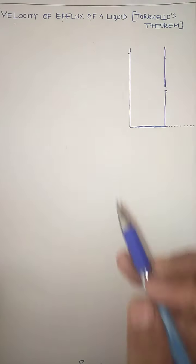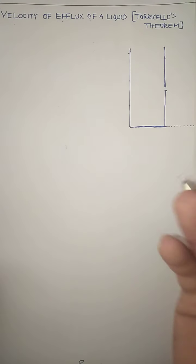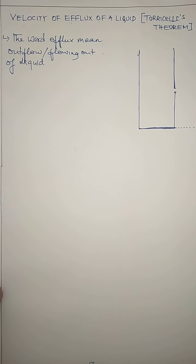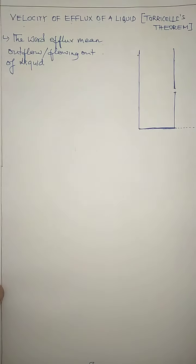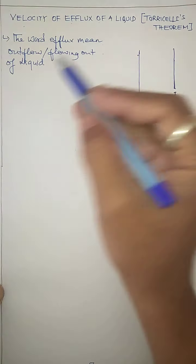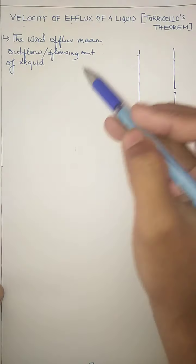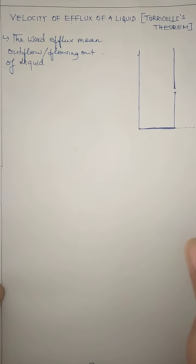The word efflux means outflow — the flow out from something. We are dealing with the outflow of liquid, which can also be a gas, but here we deal with liquid. This outflow occurs from a very small hole or narrow opening, and this small hole or narrow opening is also called an orifice.